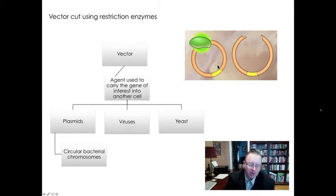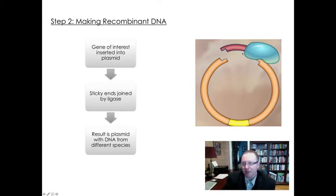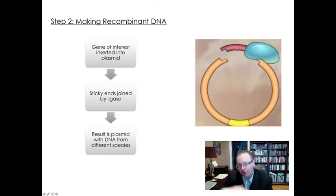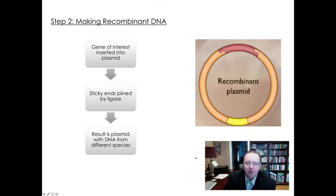The next step in the genetic engineering experiment is to make the recombinant DNA. Recombinant DNA can be defined as DNA that is from two different sources or two different species joined together. The gene of interest is inserted into the plasmid — here you can see the plasmid cut open by the restriction enzyme with sticky ends. This red piece represents our gene of interest, and it's going to bond through complementary base pairing. The sticky ends are complementary to each other, and then the separate DNA pieces are joined by ligase forming phosphodiester bonds. The result is the recombinant plasmid — a plasmid with DNA from different species.